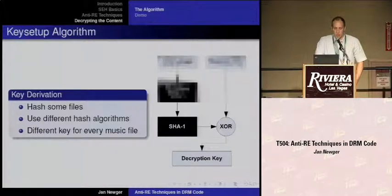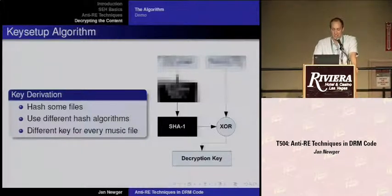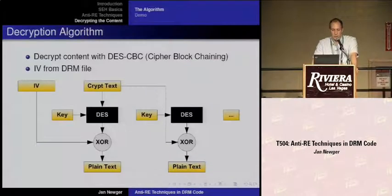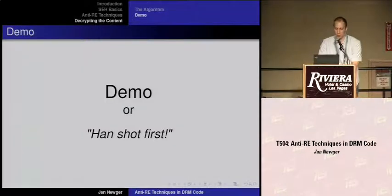The key setup algorithm works by hashing some files using different hash algorithms, and finally the encryption key is made from an XOR operation. The key turns out to be different for every music file. It's a DES algorithm, and the initialization vector comes from the DRM file.